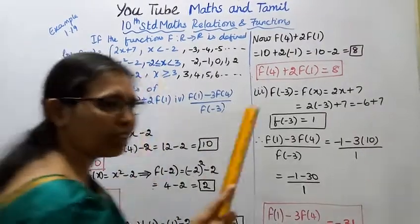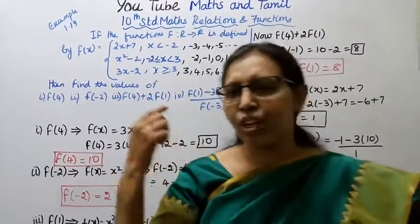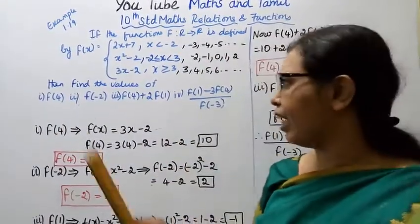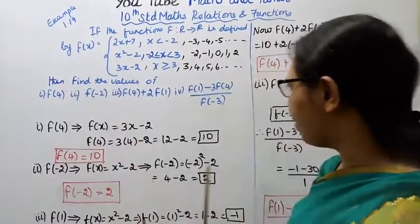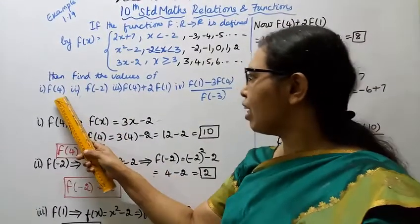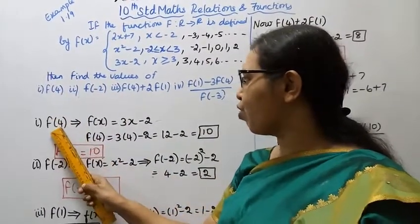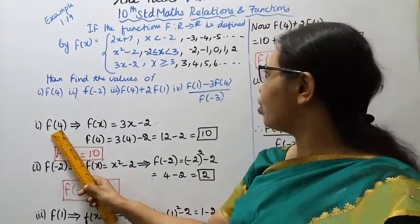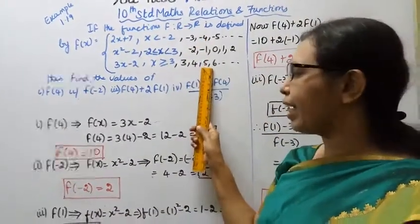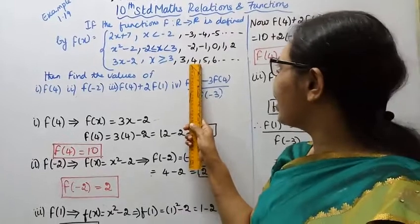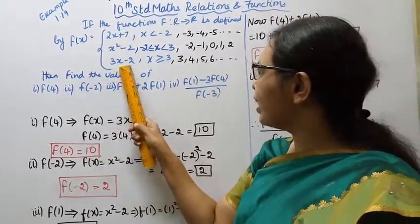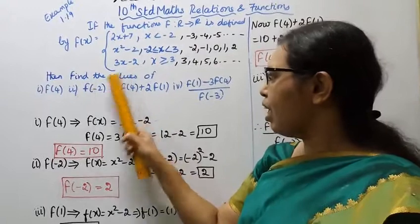Now, first question - you will find f(4). First, f(4) - where does 4 belong? 4 is greater than or equal to 3, so f(x) equals 3x minus 2. Now f(4) equals 3 into 4.